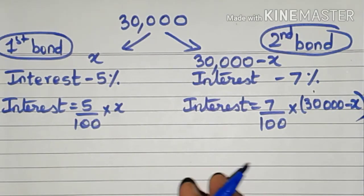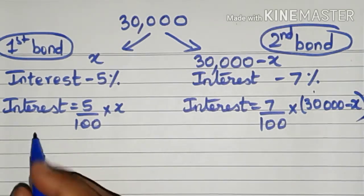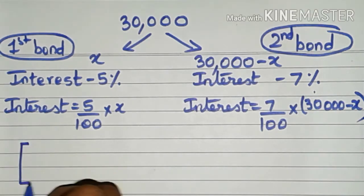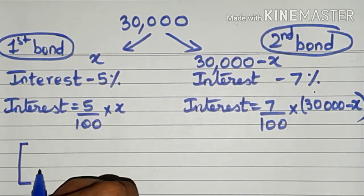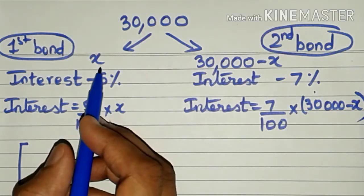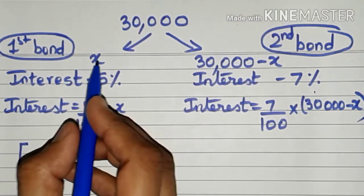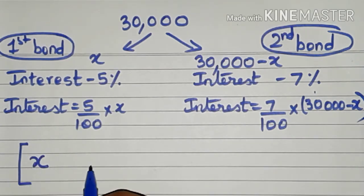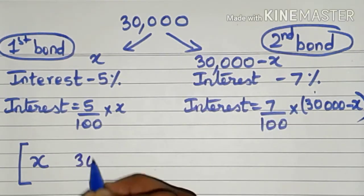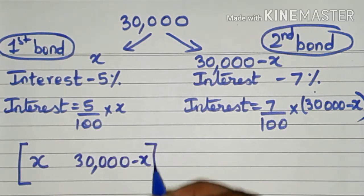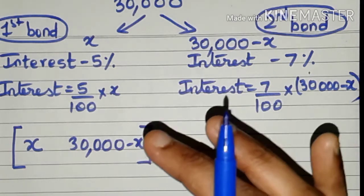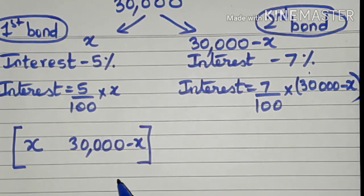We have to represent all this in terms of matrix multiplication. Let us have an investment matrix where we write the investment in each bond. The first row first column entry will be the investment in the first bond — the 5% interest bond — which is x. In the first row second column we write the investment in the second bond, which is 30,000 minus x. This has to be multiplied with an interest matrix constructed so that we can multiply it with the investment matrix.